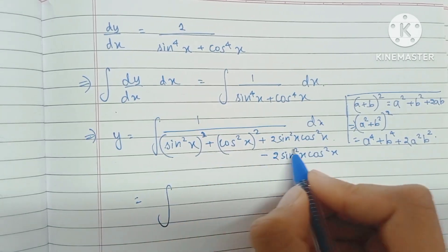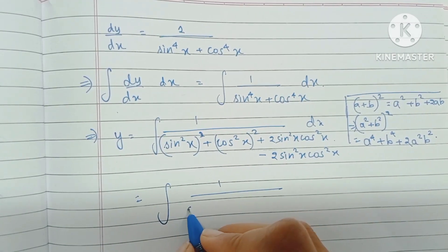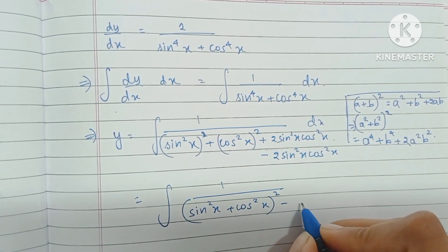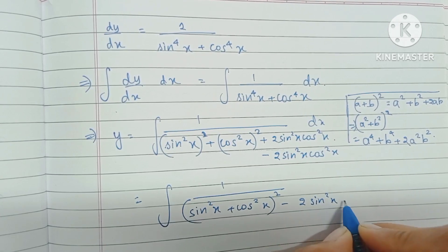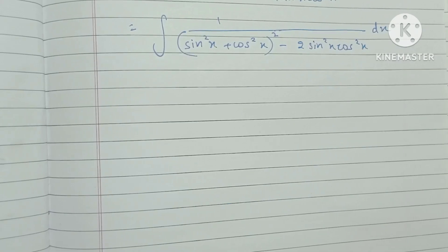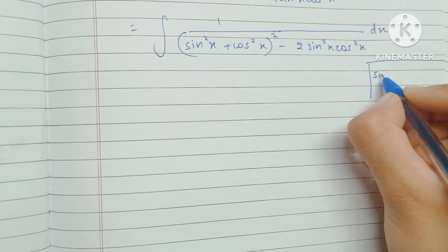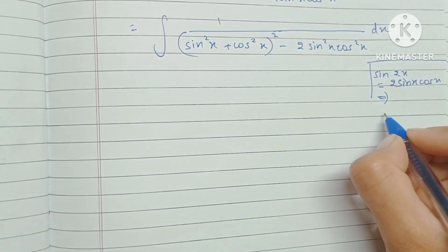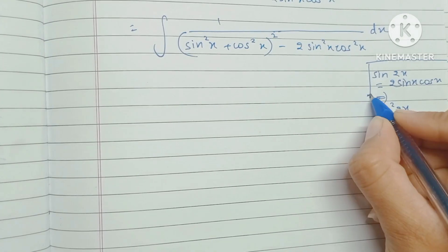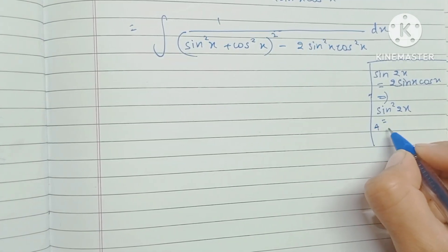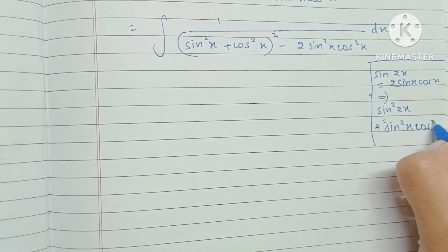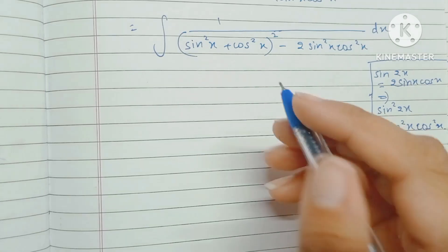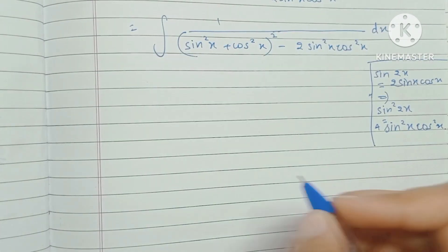Now we can write the first part of the denominator as (sin²x + cos²x)² minus 2sin²x·cos²x. Recall that sin2x equals 2sinx·cosx, which means sin²2x equals 4sin²x·cos²x. So in this term I can multiply and divide by 2 so that I get 4sin²x·cos²x divided by 2.